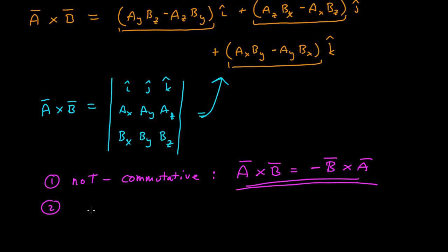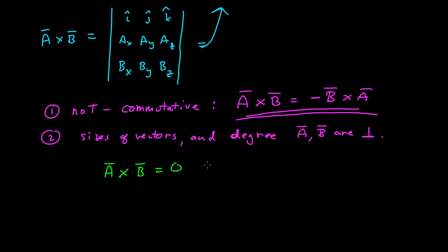Qualitatively, what the cross product is telling you is the sizes of the vectors and the degree to which they are perpendicular. A cross B is equal to zero if A and B are parallel or anti-parallel. If they're pointing along the same line,